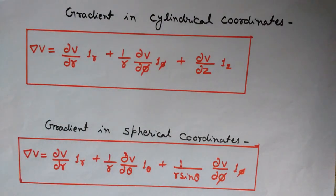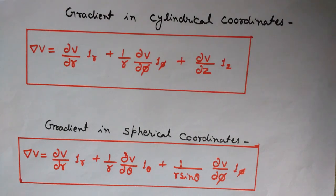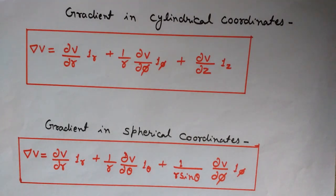So I hope you understood the physical significance of gradient, the mathematical concept and definition of gradient, and how we can represent the gradient in Cartesian, cylindrical, and spherical coordinate systems with the formulas for each. Thanks for watching.